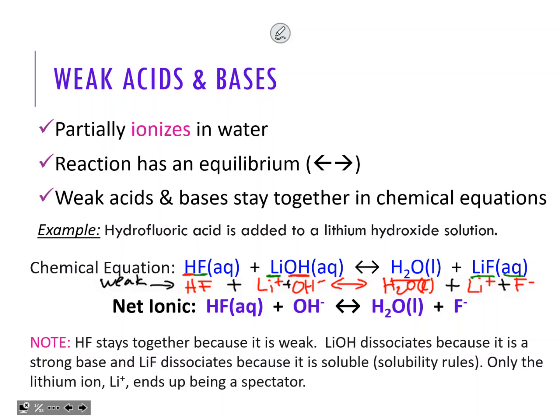We cross out lithium, and everything else remains in the net ionic equation: keep the weak acid HF, keep the hydroxide because it reacts, keep the water, and keep the fluoride. When you're doing weak acid and base net ionic equations, you'll notice there's only one spectator instead of two - unlike precipitation reactions where there are two spectators. Just make sure you look at your strong list: if it's not on the strong list, don't separate it, keep it together.